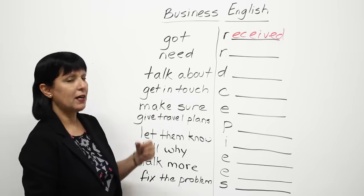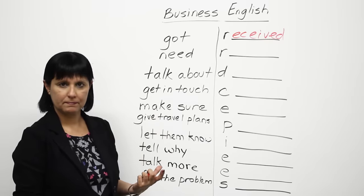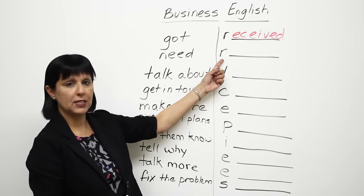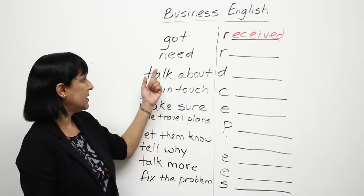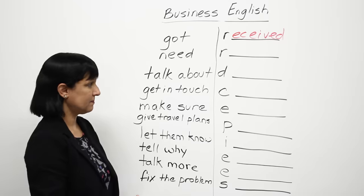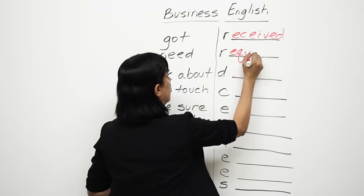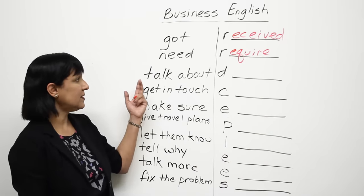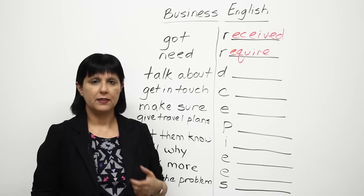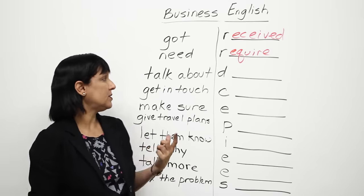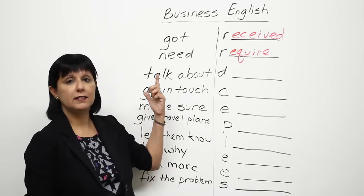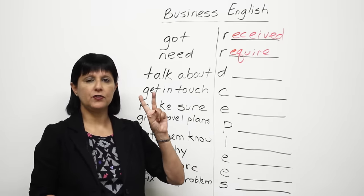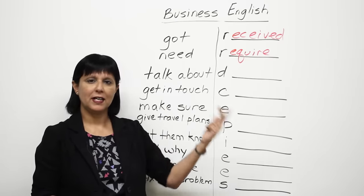Suppose you want to tell someone 'I need your help' or 'I need some help.' What word could you use that starts with R instead of 'need'? Require. So instead of saying 'I need some help,' you could say 'I require some assistance.' Now you've changed two words — the verb and also a noun.